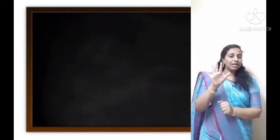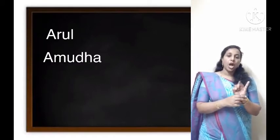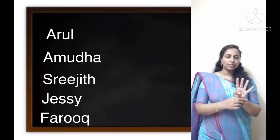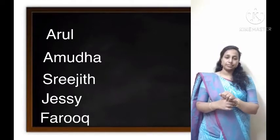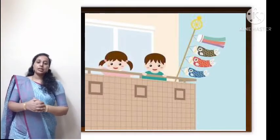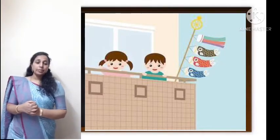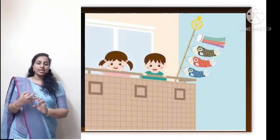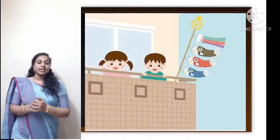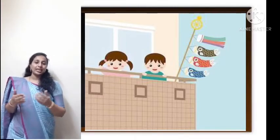Now let's know the five main characters in this chapter. They are Arul, Amuda, Sreejit, Jesse, and Farooq — the five detectives. Arul and Amuda were sitting on the balcony and have spent the last three vacations in Ooty. They miss their other three friends, Sreejit, Jesse, and Farooq. They have solved many mysterious cases in Ooty. Let's see what they are going to do in this summer vacation.